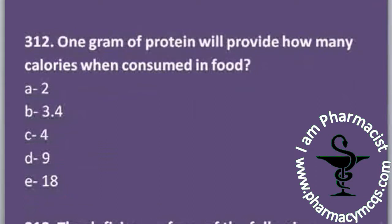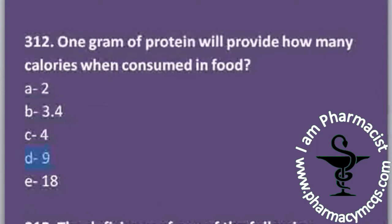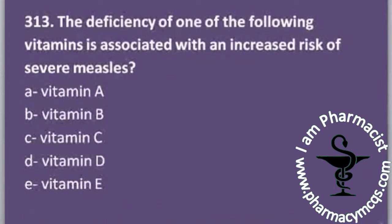The next MCQ is a biochemistry question: one gram of protein will provide how many calories when consumed in food? Options are 2, 3.4, 4, 9, and 18 calories. One gram of protein provides 4 calories. Carbohydrates provide 3.4 calories and fats provide 9 calories of energy.